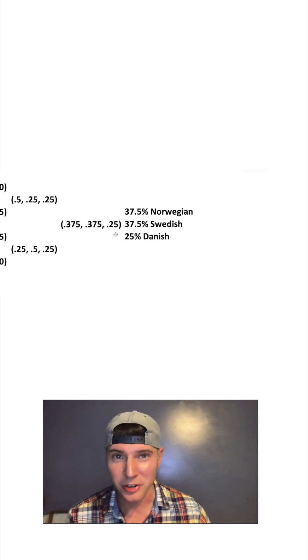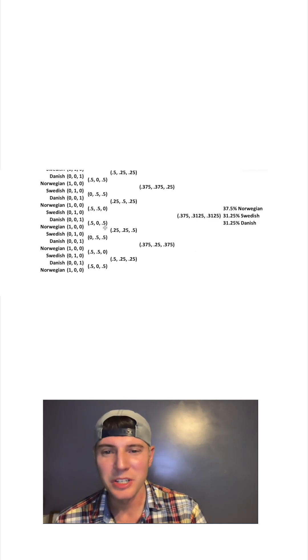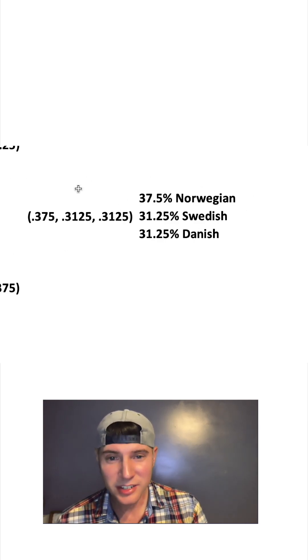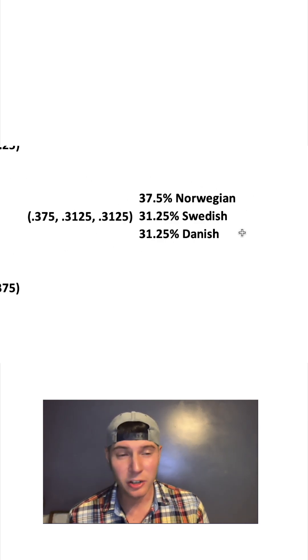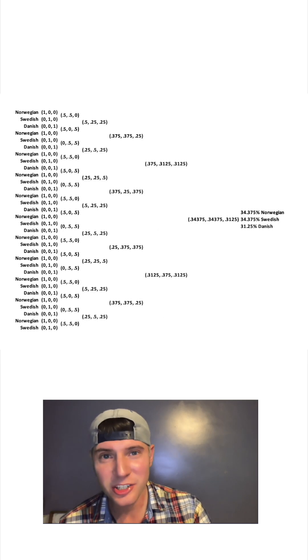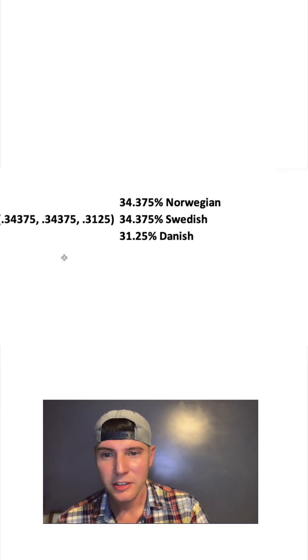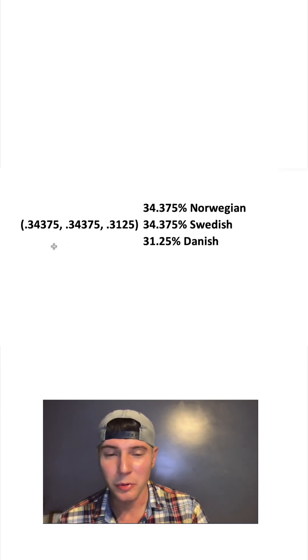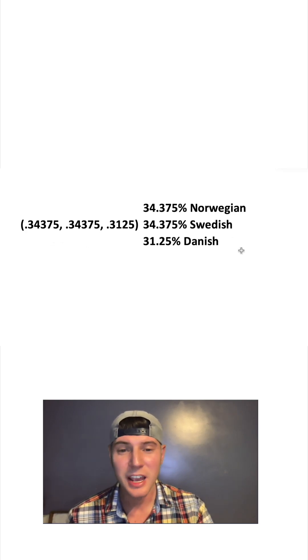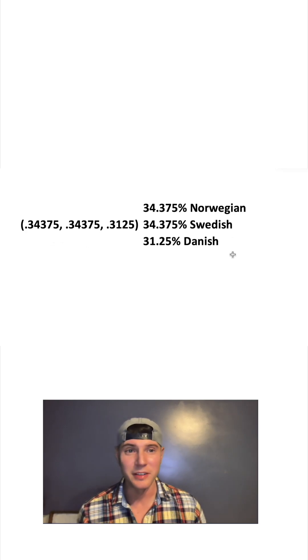We're getting closer to 33/33/33. If we do the same thing with 16 people, we get even closer to 33%, but we're still not there yet. Here it is starting with 32 people, and we end up with 34.375% Norwegian, 34.375% Swedish, and 31.25% Danish. We're getting really close.